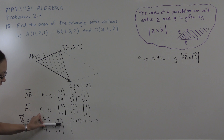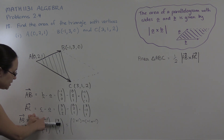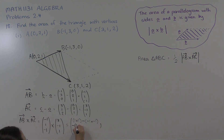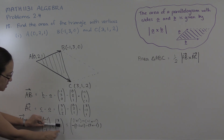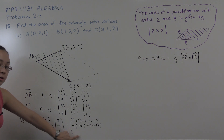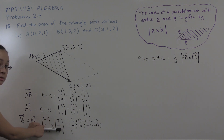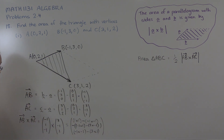For the second component we block out the second row, and importantly there's an extra minus sign. So it's the negative of: minus one times one, take three times minus one. For the third component we block out the last row, with no extra minus. We want minus one times minus one, take three times one.